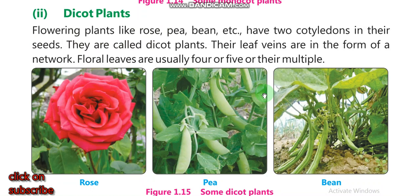The second type is dicot plants, such as rose, peas, and beans. These are called dicot plants because they have two cotyledons in their seeds. When you cut the seeds, they split into two equal halves — the cotyledons are two. Their leaves have veins in the form of a network; they are not parallel.